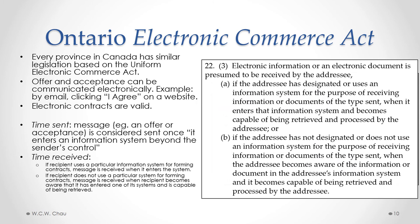When is an electronic message received? If the person you're sending the message to uses a particular information system for forming contracts — the best example being an e-commerce website set up specifically for forming contracts — then that message, such as pressing a button saying 'I agree to this contract,' is deemed to be received when it enters that system. In other words, when you press that button and the electronic signal leaves your computer and enters the e-commerce website, that is the time the offer or acceptance is deemed to be received.